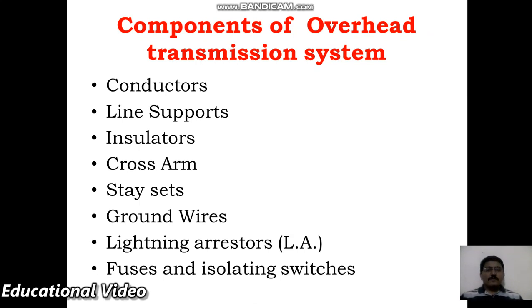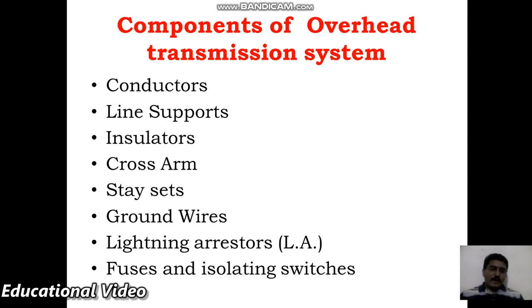The different components of overhead transmission systems are: conductors, line supports, insulators, cross arms, stay sets, ground wires, lightning arrestors, fuses, and isolating switches.